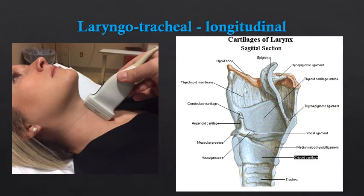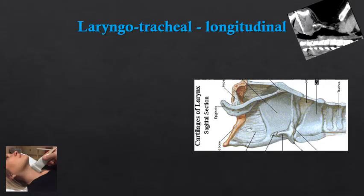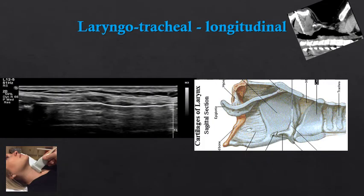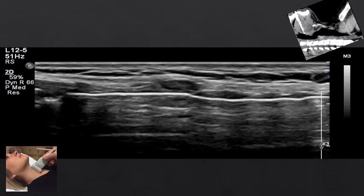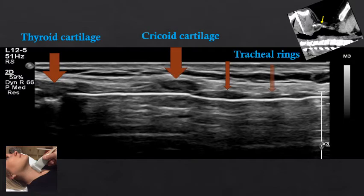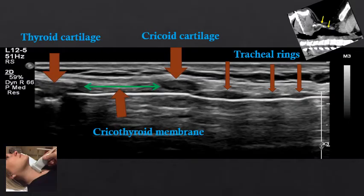If we orient our probe into a longitudinal or sagittal plane and image below the hyoid bone, we see the laryngotracheal structures. A diagram of the larynx and a CT of the larynx are provided for reference. This is an ultrasound of the larynx at midline below the hyoid bone. Zooming in, we have thyroid cartilage along the superior margin, cricoid cartilage in the middle, and tracheal rings below the cricoid. In between the thyroid cartilage and the cricoid cartilage we have the cricothyroid membrane, an important anatomic structure for accessing the airway in emergencies.